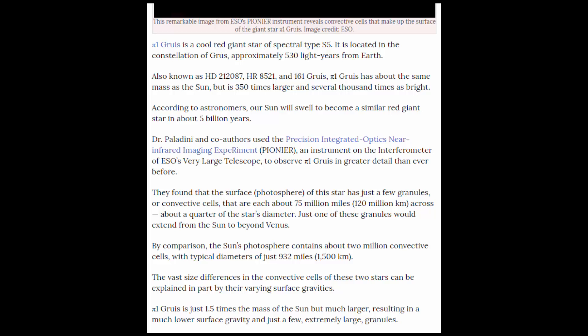They found that the surface photosphere of this star has just a few granules or convective cells that are about 75 million miles across, about a quarter of the sun's diameter. Just one of these granules would extend from the sun to beyond Venus. By comparison, the sun's photosphere contains about two million convective cells with typical diameters of about 932 miles.